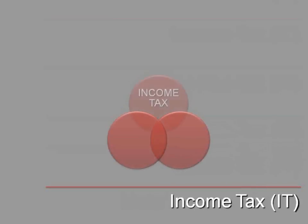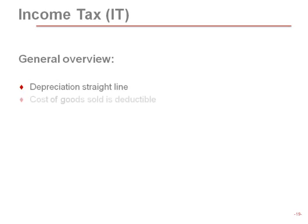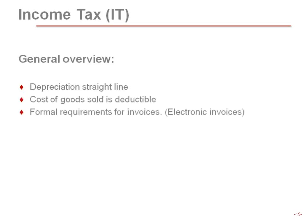Talking about our first tax — income tax. Depreciation is straight line; there are no other methods. Cost of goods sold is deductible, which changed around 2005 from the prior rule where purchases were deductible. We also have inflationary accounting, which calculates based on liabilities and assets whether you've obtained a profit or loss because of the real value of money when you pay or collect something.